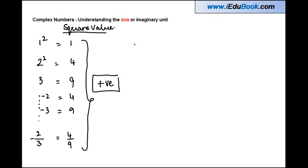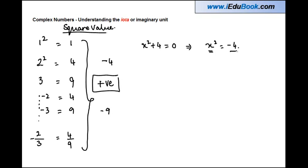You must not have come across any number whose square is a negative number. So you will not find something which has a square of minus four or minus nine. But this was a common problem faced when people came across certain equations. For example, if you have to find the value of x where x squared plus four equals zero, you get x squared equals minus four.